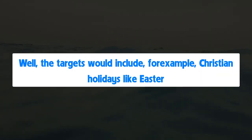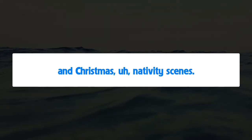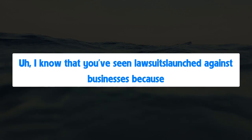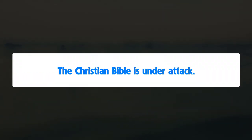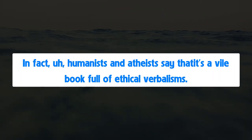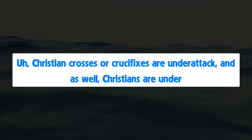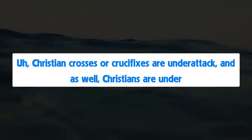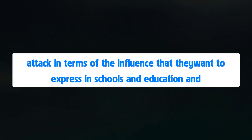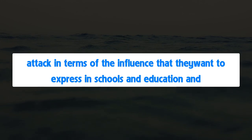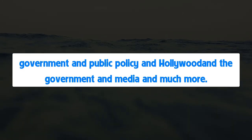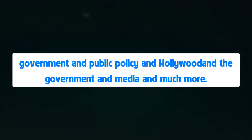The targets include Christian holidays like Easter and Christmas, nativity scenes — there have been lawsuits launched against businesses because they had a nativity scene out front. Christian morality is under attack. The Christian Bible is under attack — humanists and atheists say it's a vile book full of ethical barbarisms, an ancient book written by superstitious men. Christian crosses and crucifixes are under attack. Christians are under attack in terms of their influence in schools, education, government, public policy, Hollywood, and media. The humanists want to marginalize Christians and make them irrelevant in the current dialogue and debate.